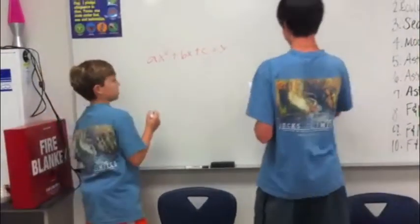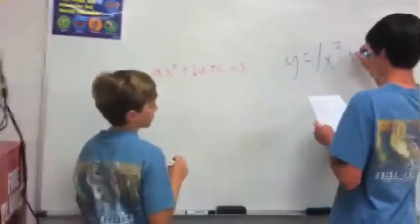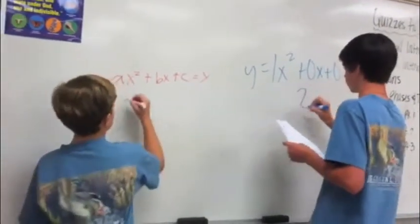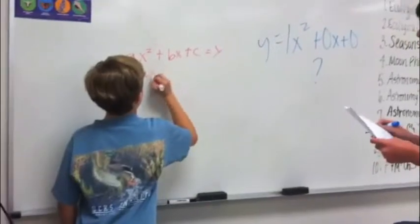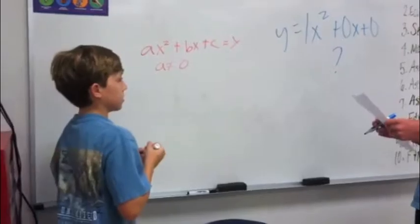Okay, that makes sense. So that means it can be written in the form y equals 1x squared plus 0x plus 0? Yes, but remember, the a cannot equal 0, and a, b, and c have to be real numbers. Okay, that makes sense.